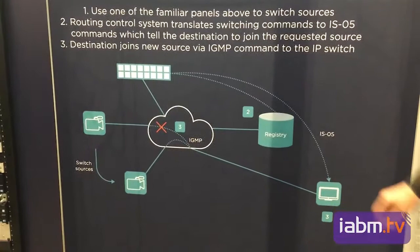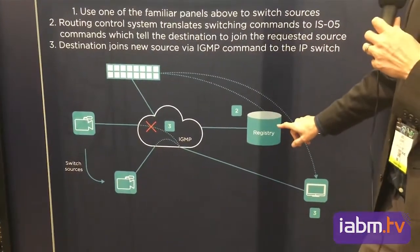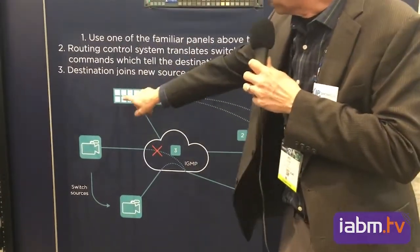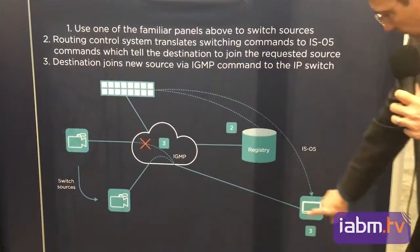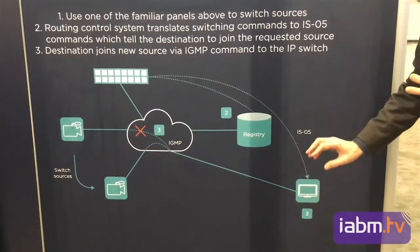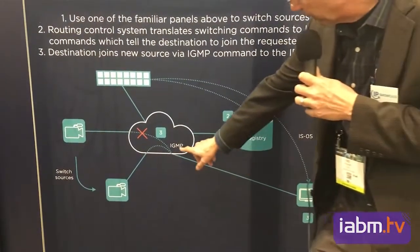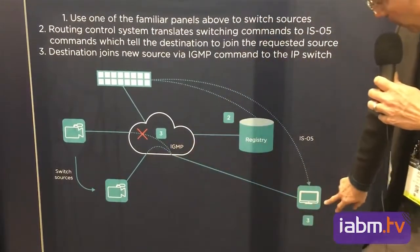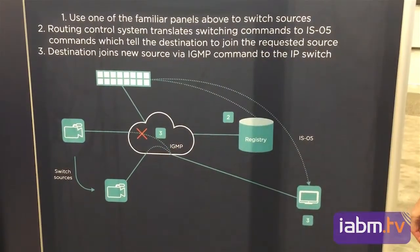The way this works is the switch queries the registry to find out what devices are on the network. It can then populate the buttons with the names if you like. When the user pushes a button to connect the source to a destination, a message is sent down to the receiving device. This tells the receiving device what the multicast IP address is of the source. It then sends an IGMP message to the switch that tells the switch to let that source's flow pass through the receiver and then shut off the flow of the previous source.